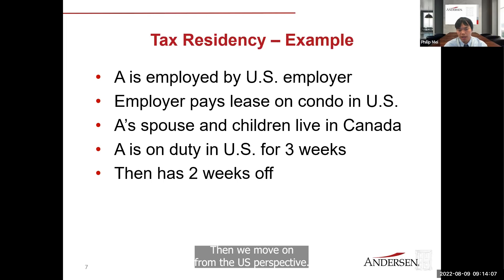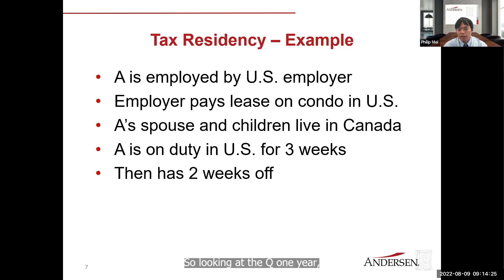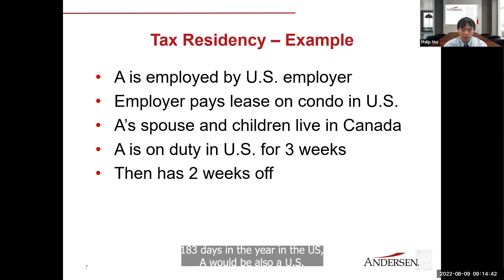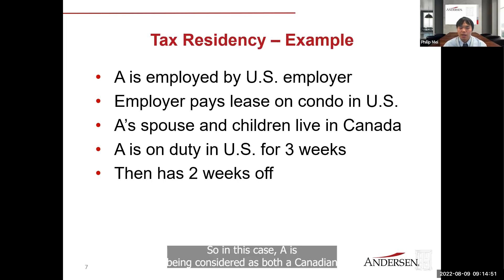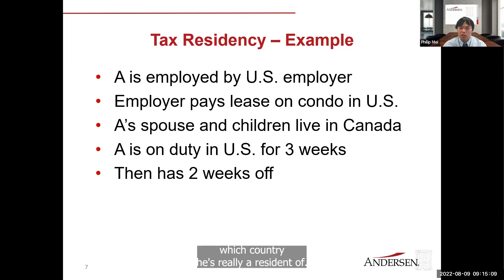Moving to the U.S. perspective — the test is objective. Assuming A is not a citizen or green card holder, A would be a U.S. tax resident if meeting the substantial presence test. A is spending three weeks out of every five in the U.S. — more than 50% of the year — which means over 183 days physically in the U.S. So A would also be a U.S. tax resident under U.S. domestic law. Since A is considered a resident of both countries simultaneously, we must refer to the Canada-U.S. income tax treaty tiebreaker rule to determine true residency.